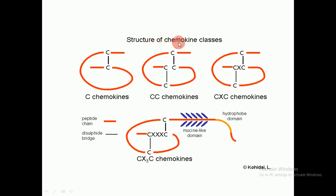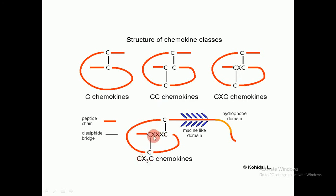Here is the structure of the chemokine classes. This is CC — cysteine-cysteine — showing two adjacent cysteines. Here is CXC, with one amino acid between the two cysteines. And here CX3C, with three amino acids between the two cysteines — so X3, because we have three amino acids. This also shows the disulfide bond and the polypeptide chain, illustrating the structure of the chemokine classes.